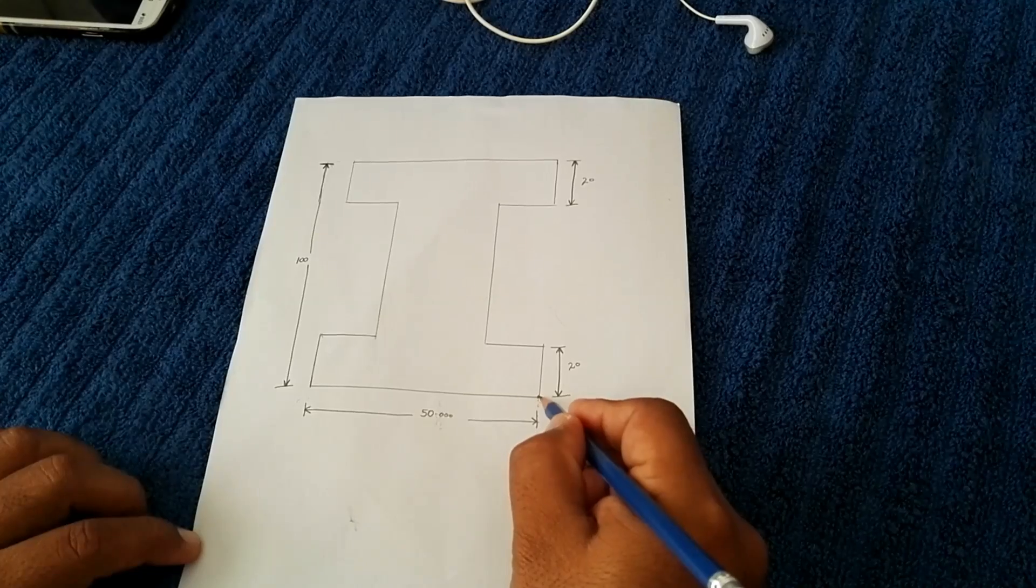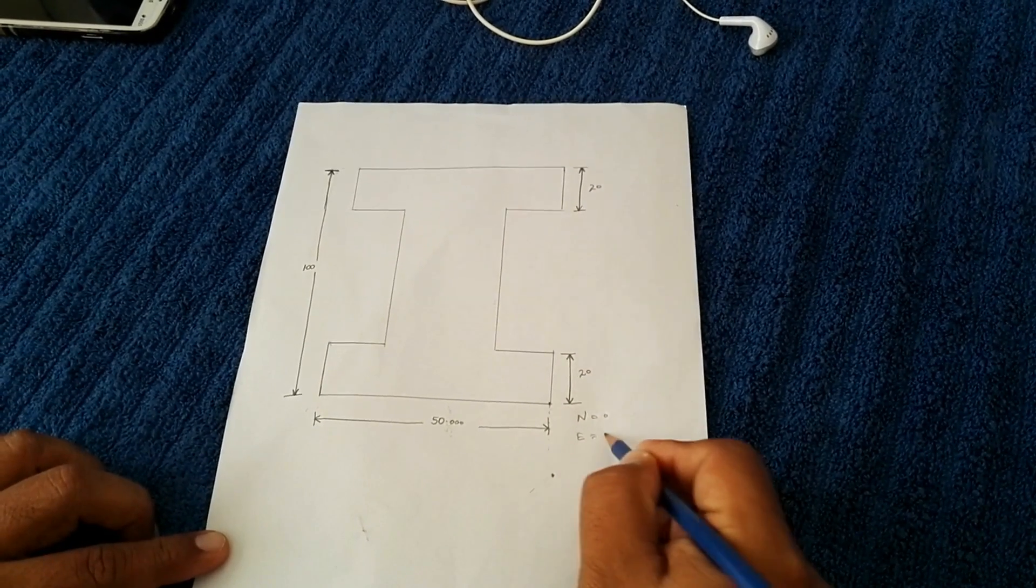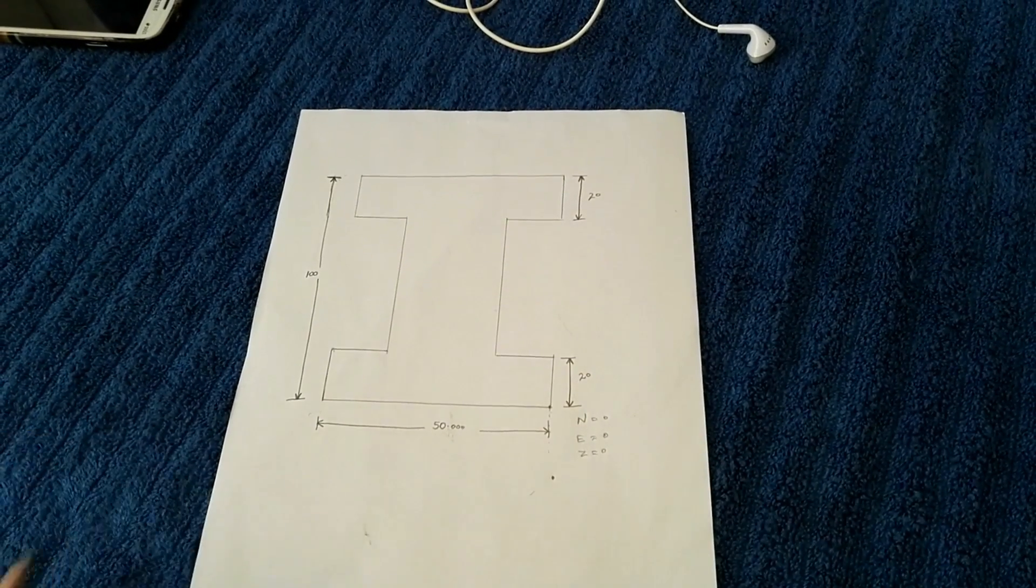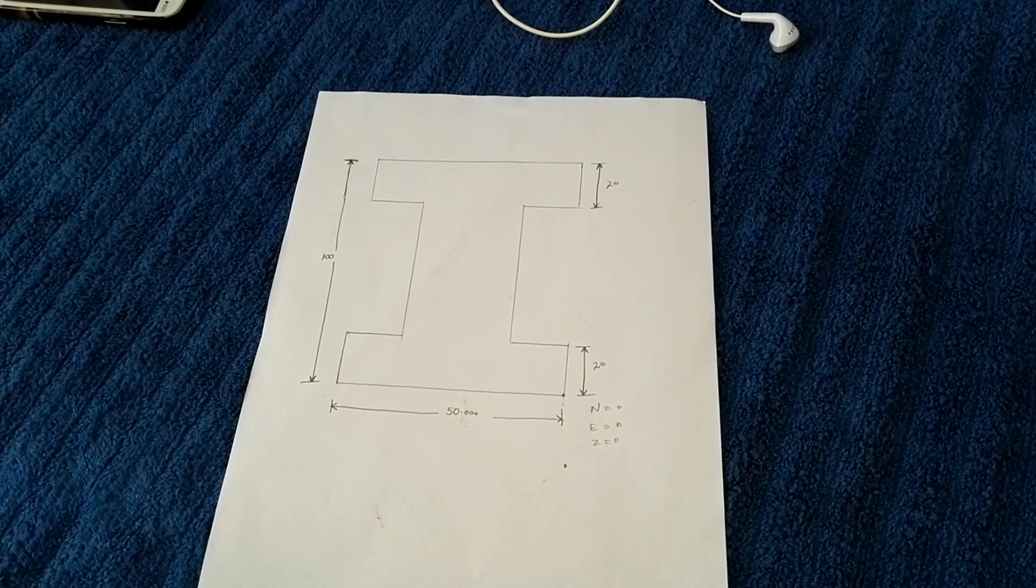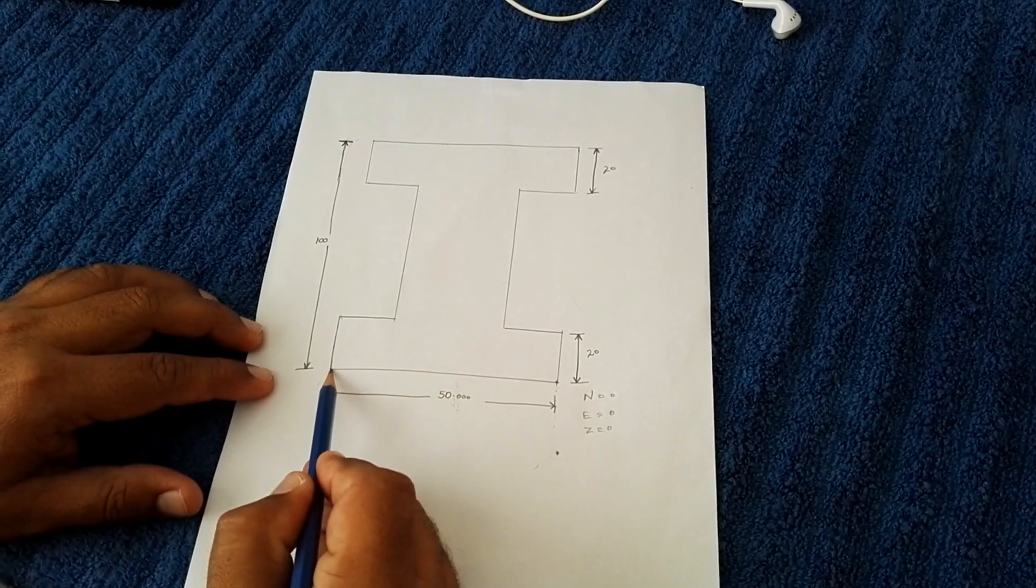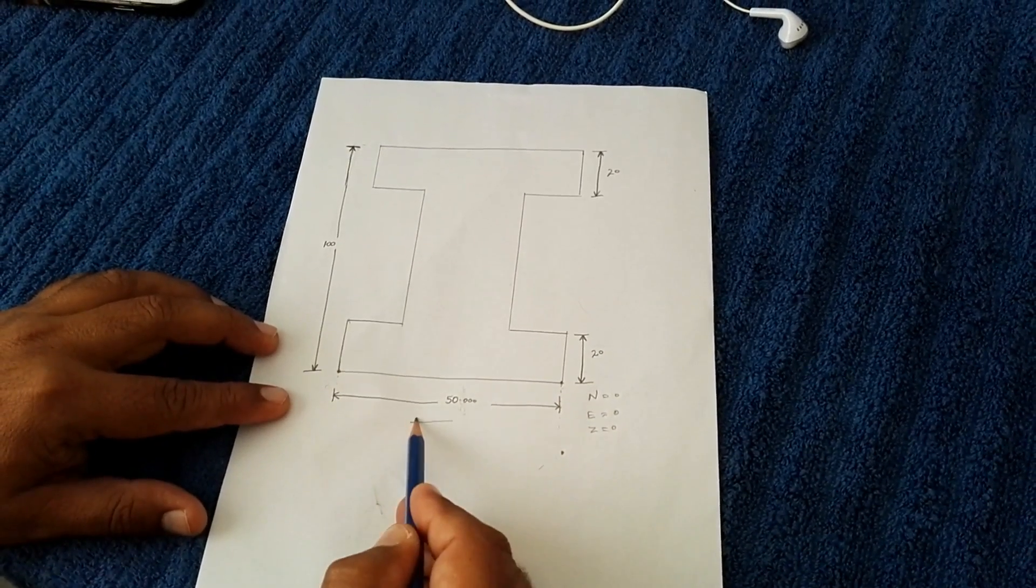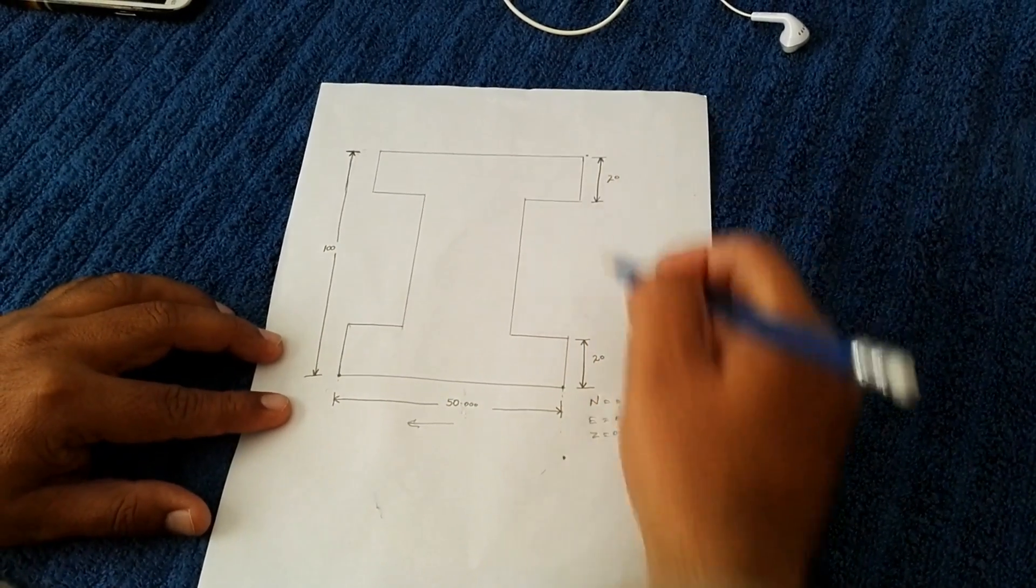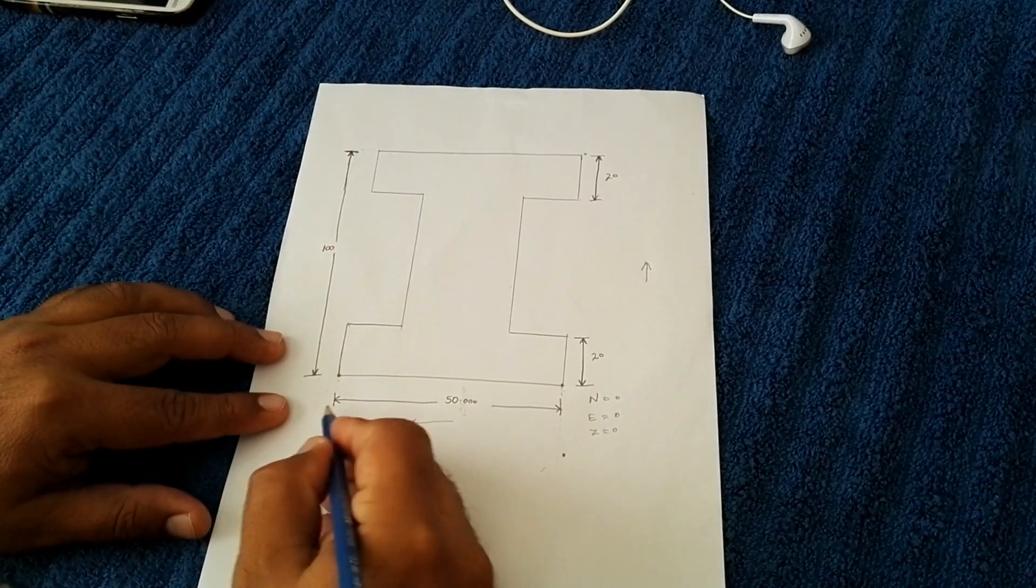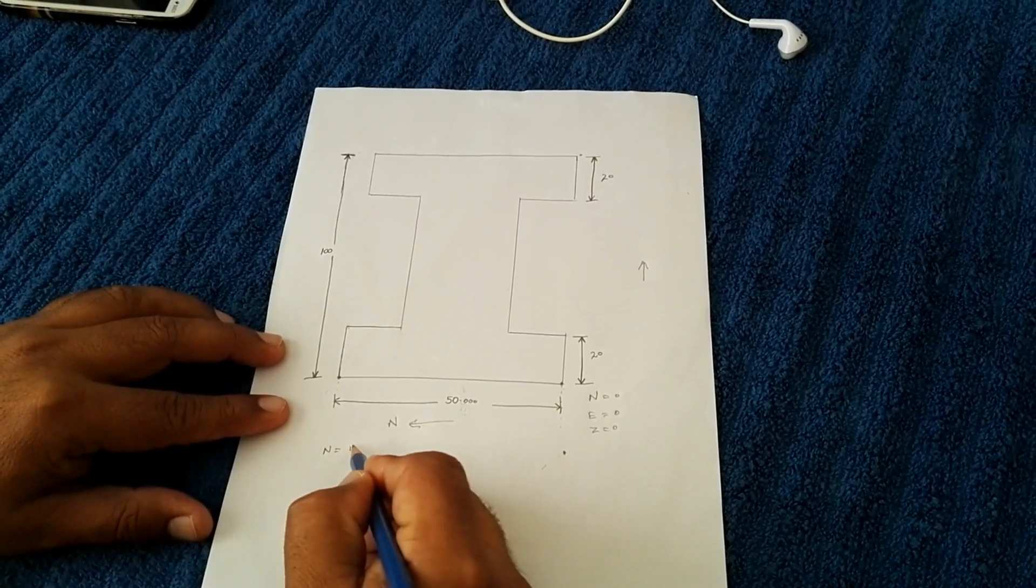And this point, when I measure it, will become north equals 0, east equals 0, and elevation also 0, as you can see in my last video. Then I will measure the second point. This second point goes to the north direction. If I measure this second point, then my north is in this direction. So in this case, my north is equal to 50.